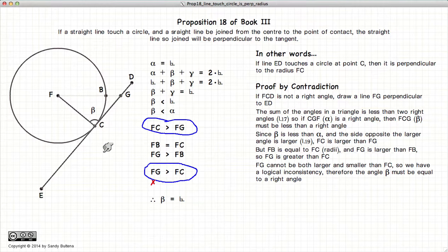So to sum it up, if we have a line that touches a circle, and a line from the center to the point of touching, those two lines will form a right angle.